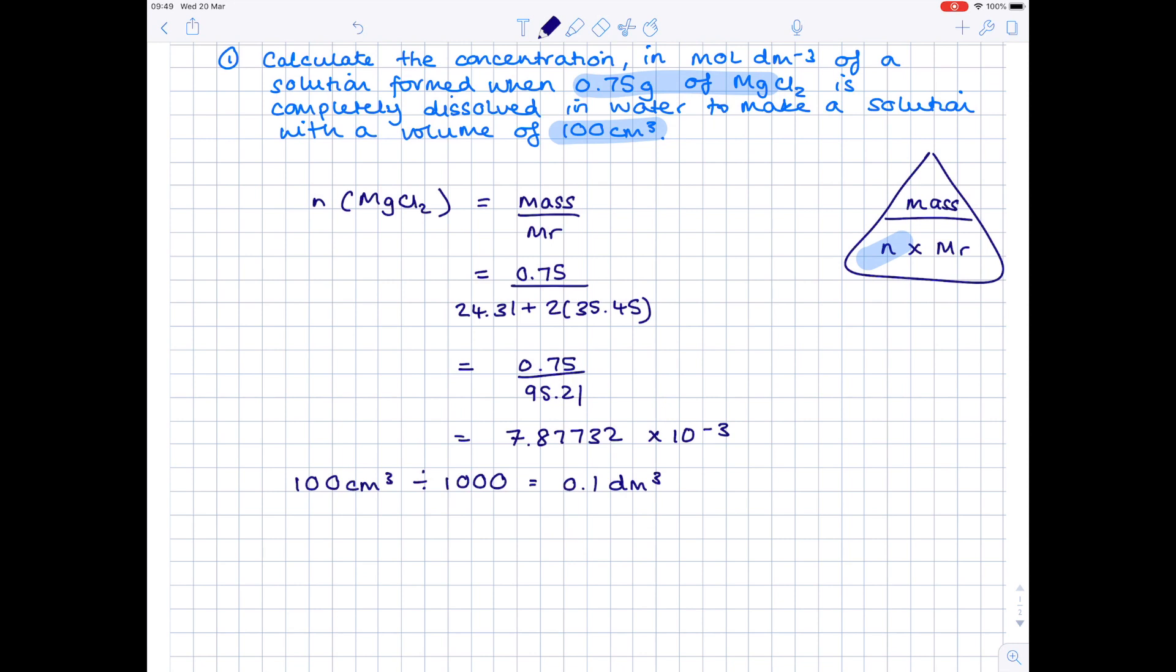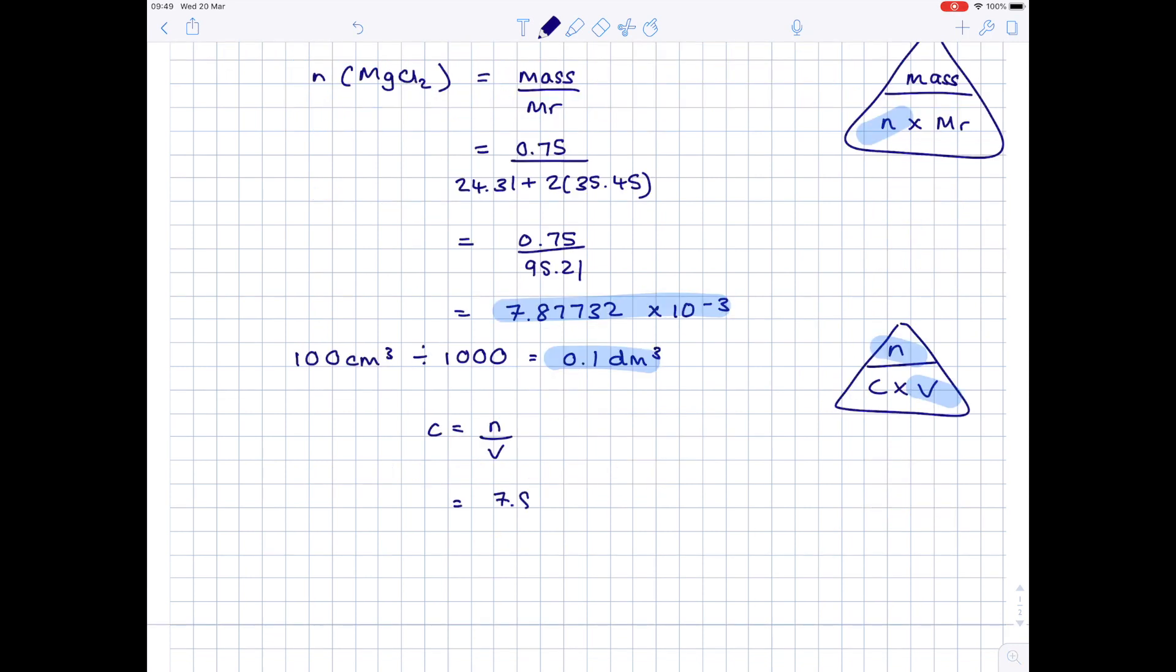And then finally, because we're being asked to find the concentration, we now need the triangle that I've already mentioned, which is number of moles is concentration times volume. Hopefully you can see that we've just calculated number of moles here. We've got a concentration here. So we have these two values. So we can quite simply do concentration equals number of moles divided by volume to get 7.87732 times 10⁻³ divided by 0.1. And our final answer here is 0.0788 moles dm⁻³, and that's to 3 sig fig.